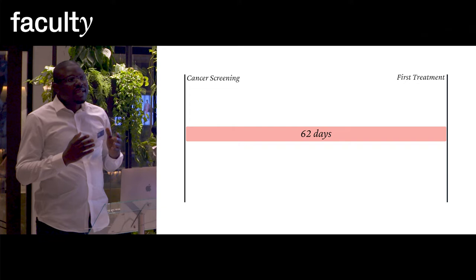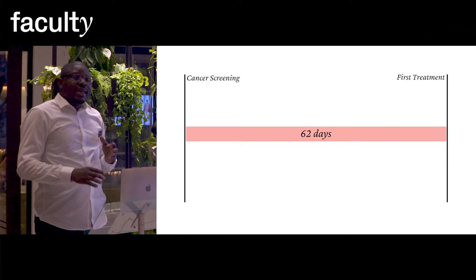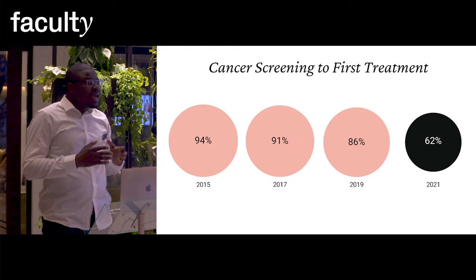Imagine a patient has gone to the GP to see his doctor, and the doctor advises that he does cancer screening. From the day the doctor advises a patient to do cancer screening, the recommendation is that within 62 days, treatment should commence. It is not possible to achieve this for all patients, but NHS has a standard that at least 90% of patients should commence treatment.